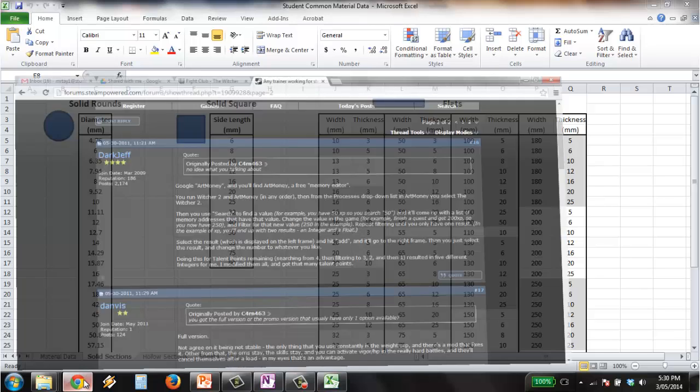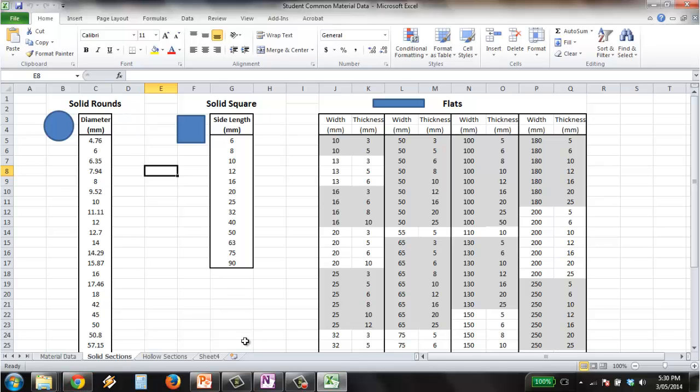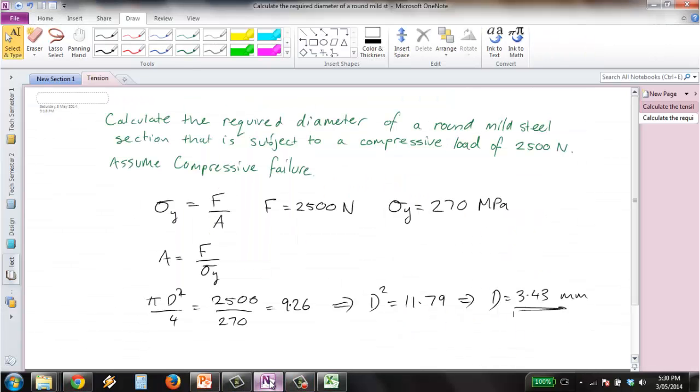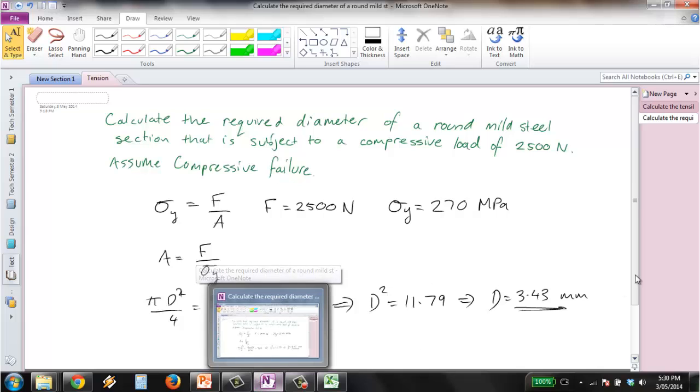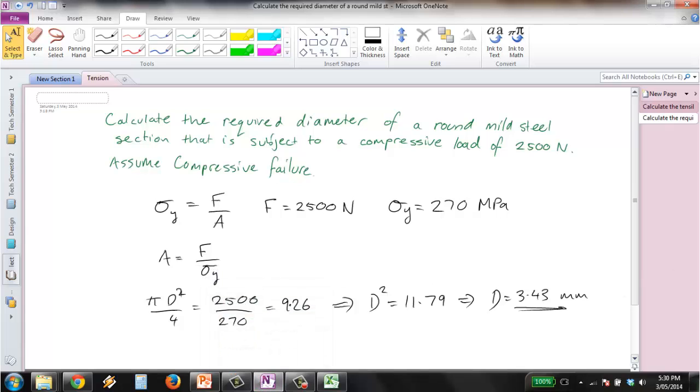So the section size to be used, next section size to be used, is 4.76 millimeters in diameter.